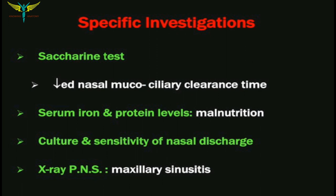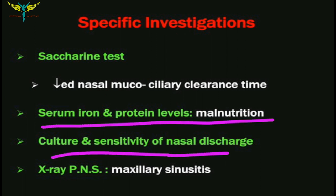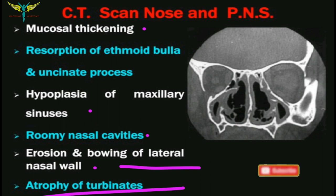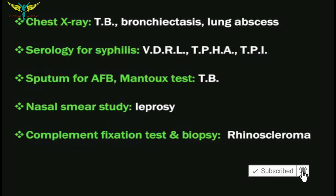Investigations include the saccharine test to note decreased nasal mucociliary clearance time, and serum iron and protein levels for malnutrition. Culture and sensitivity of nasal discharge identifies the causative organism for targeted antibiotic therapy. X-ray of paranasal sinuses (PNS) shows maxillary sinusitis and rooming of the nasal cavity. CT scan of nose and paranasal sinuses can note mucosal thickening, reabsorption of ethmoidal bulla and uncinate process, hypoplasia of maxillary sinuses, roomy nasal cavities, erosions, bowing of the lateral nasal wall, and atrophy of turbinates. X-ray chest is done to note TB, bronchiectasis, and lung abscess.